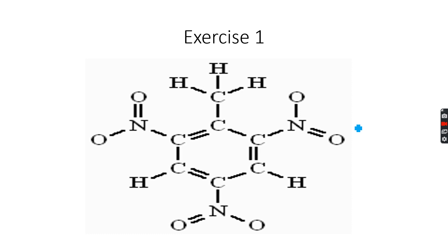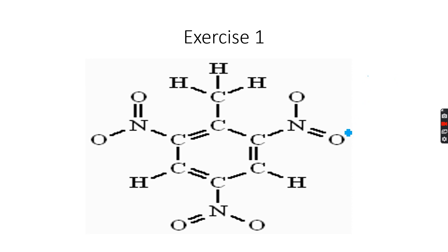This is another benzene derivative — it's actually trinitrotoluene, TNT. You might have heard about TNT explosives; it's actually this molecule that is used in those explosives. These are the nitro groups: NO2, NO2, NO2. Methyl benzene is also known as toluene, so this is trinitrotoluene.